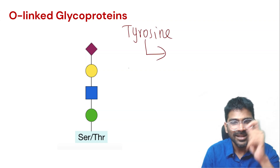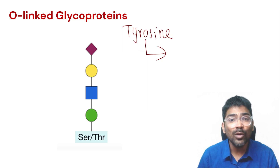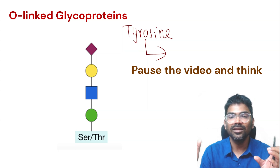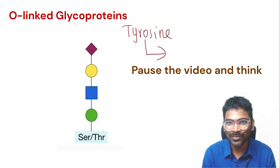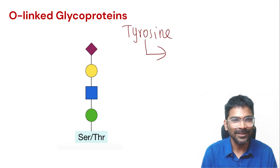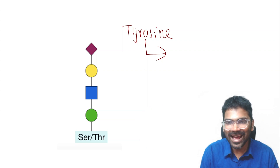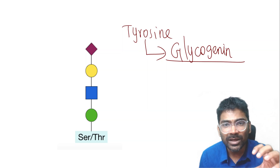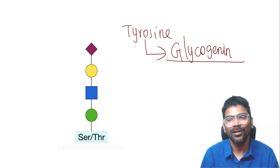Can you name that glycoprotein? You might have studied it in carbohydrate metabolism. It is a glycoprotein to which multiple glucose molecules are attached, forming a highly branched structure. The answer is glycogenin — a protein that serves as a primer during glycogen synthesis. Glucose is attached to the tyrosine of glycogenin.